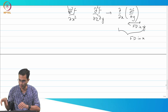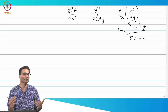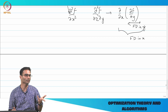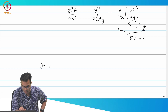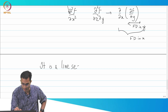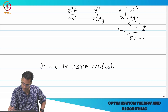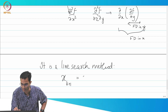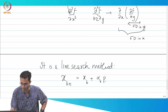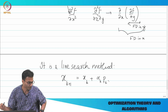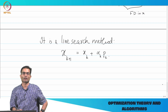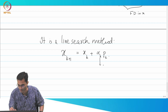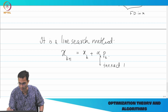Let's do a brief revision. What are the requirements for using a Newton search method? Is the Newton method a line search method? Yes, it is a line search method. The update is simply x_{k+1} = x_k + α_k p_k. We already have a recipe for calculating α from inexact line search, so α_k can come from inexact line search.